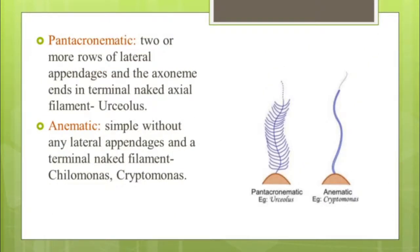Another two types of flagella are Pantonematic+Acronematic and Anematic. In Pantonematic+Acronematic, two or more rows of lateral appendages are present and the axoneme ends in a terminal naked axial filament, as in Eurcellus. Anematic flagella are simple, without any lateral appendages and without a terminal knobbed filament, observed in Chylomonas and Cryptomonas.